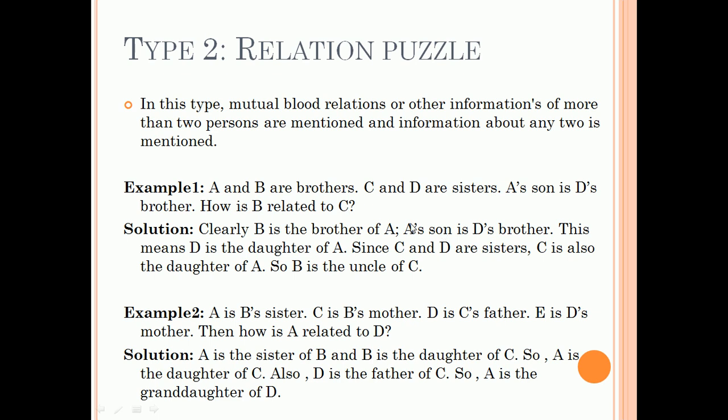Clearly, B is the brother of A. A's son is D's brother, which means D is the daughter of A. Since C and D are sisters, C is also the daughter of A. So B is the uncle of C.